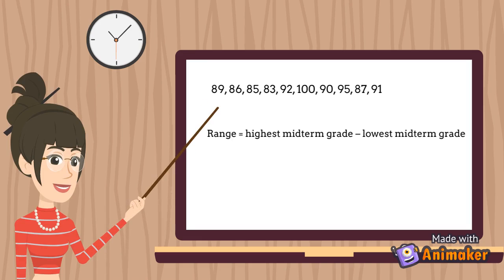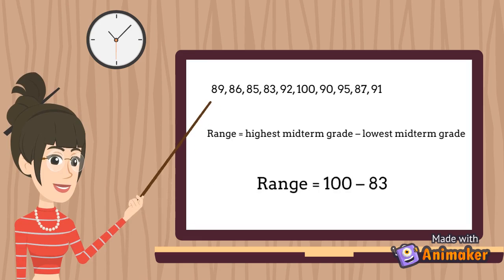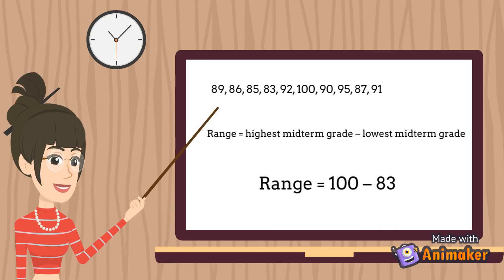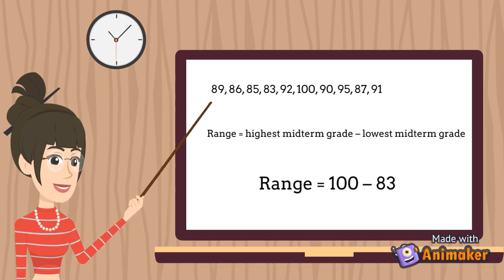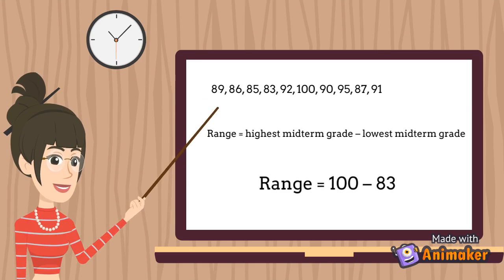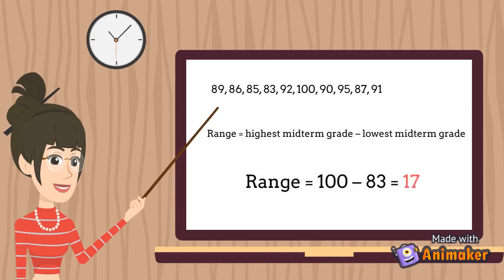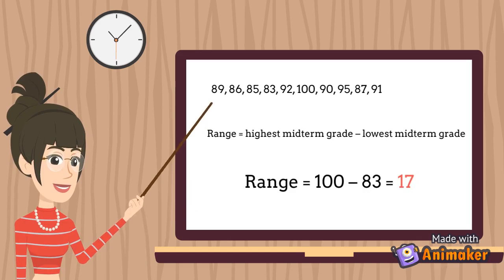As you can see, our largest midterm grade is 100 and the lowest is 83. We subtract: 100 minus 83 equals 17. Therefore, the range of the midterm grade is 17.